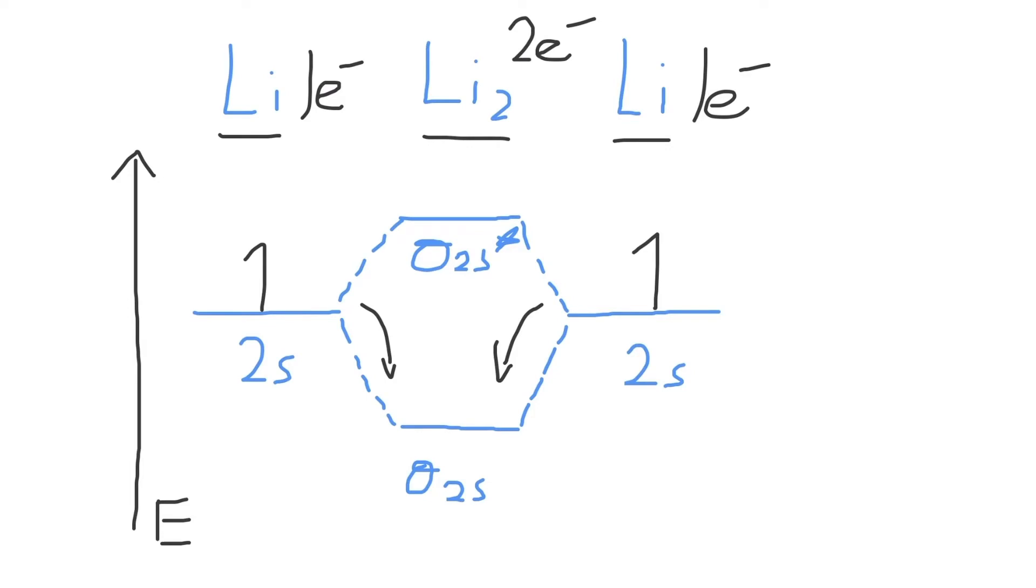In this case, these two electrons will fall into the sigma 2s bonding molecular orbital to completely fill it with two electrons. And this is your completed molecular orbital diagram for the Li2 molecule.